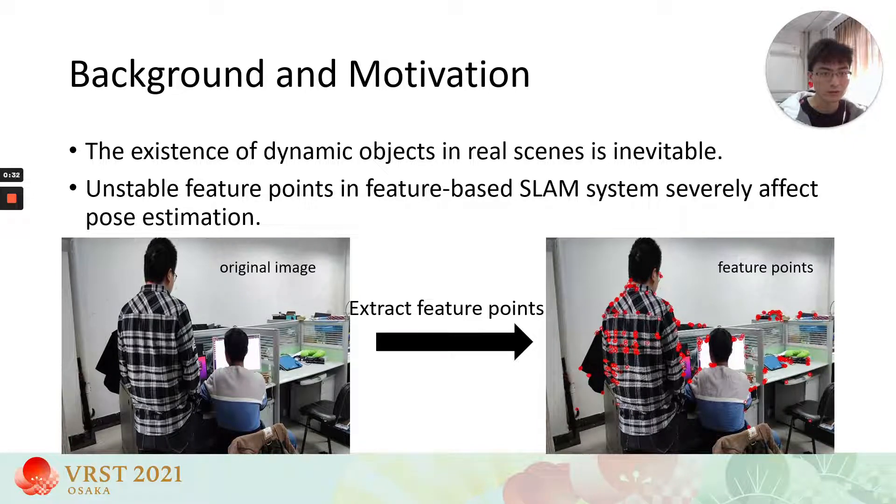The assumption of static scenes greatly limits the research and applications of SLAM systems in real world, because the existence of dynamic objects in real scenes is inevitable. The feature points of moving objects are unstable in a scene. Unstable feature points in feature-based SLAM systems severely affect pose estimation and result in larger trajectory errors and even system breakdown.